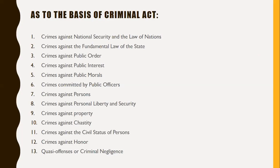Quasi-offenses or criminal negligence include imprudence and negligence. Imprudence indicates a deficiency of action and usually involves lack of skill — when a person fails to take necessary precautions to avoid injury or damage, there is imprudence. Negligence indicates a deficiency of perception and usually involves lack of foresight — when a person fails to pay proper attention and use due diligence in foreseeing impending injury or damage, there is negligence. For example, driving and hitting someone because you were not paying attention is negligence.